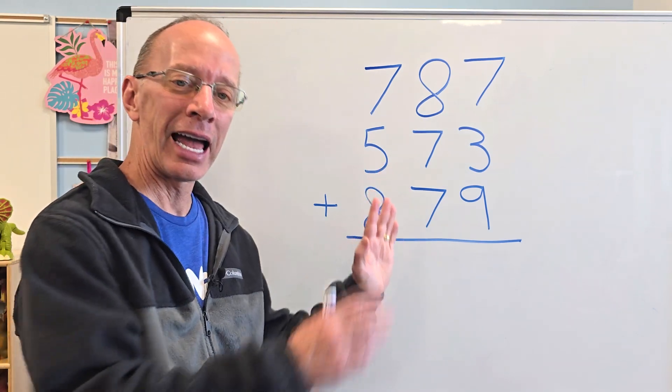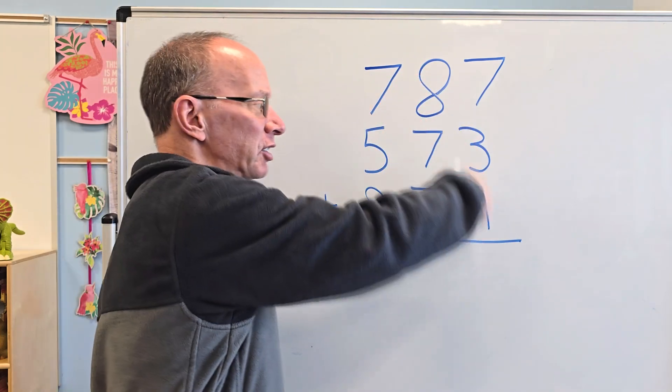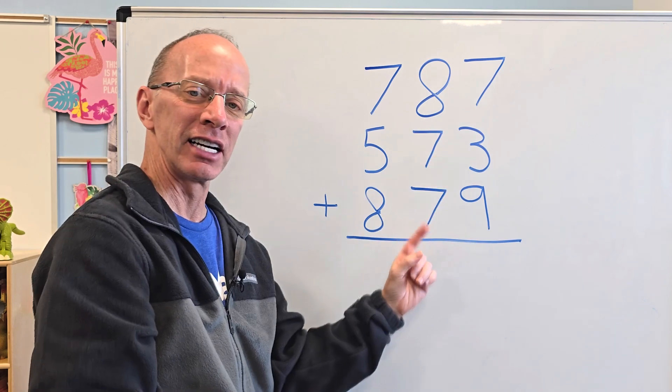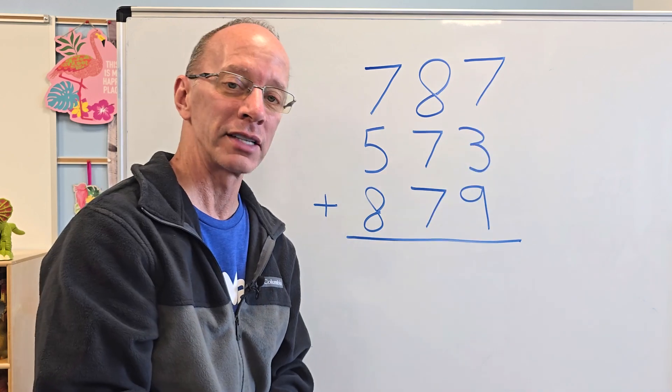First of all, when you add numbers like this, we're always going to be starting with the ones column right here. This is the ones column. That's the tens column. That's the hundreds column right there. So we're just going to add and start with the ones column.